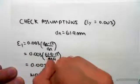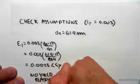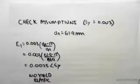So this is no yield, which means it's elastic, which means that our assumption for the strain in layer 1 being elastic is correct.